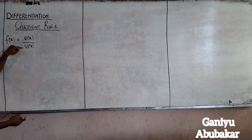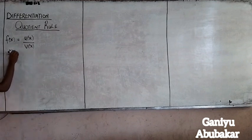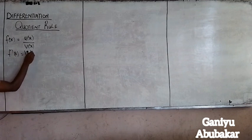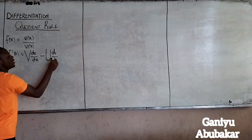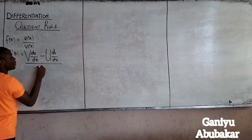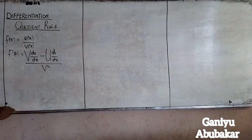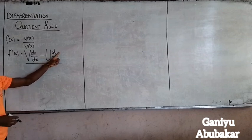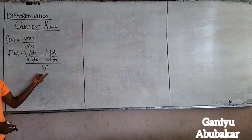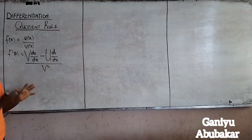So if this and this divide each other, what will result? My f prime of x will be equal to v times du/dx minus u times dv/dx, all over v squared. This is the formula for the Quotient Rule. v times du/dx minus u times dv/dx, all over v squared. You call the Quotient Rule when they are dividing each other — that's the concept.